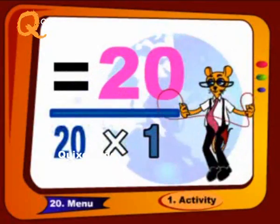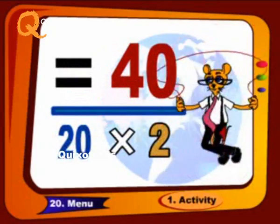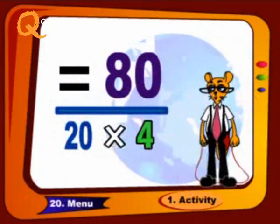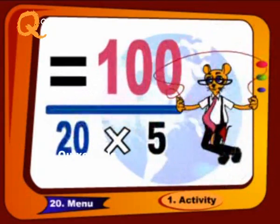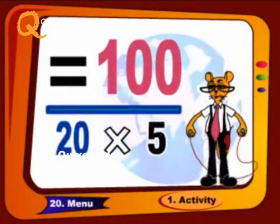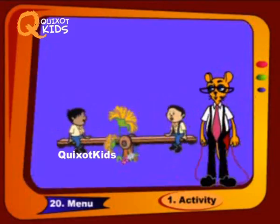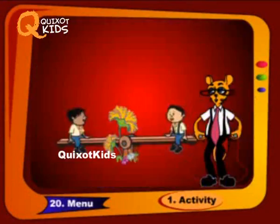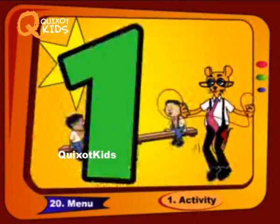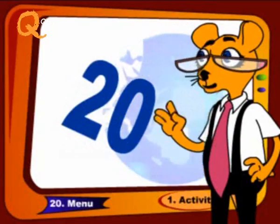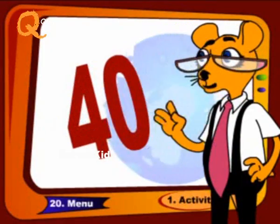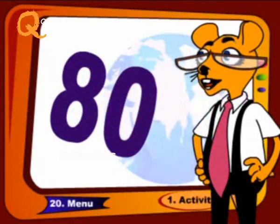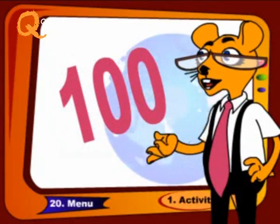Twenty 1s are 20, twenty 2s are 40, twenty 3s are 60, twenty 4s are 80, twenty 5s are 100. Now we will repeat it again — sing with me like this: 20, 40, 60, 80 and 100.